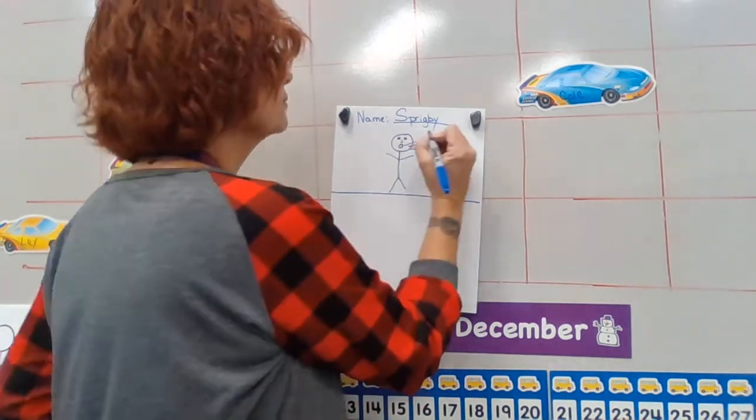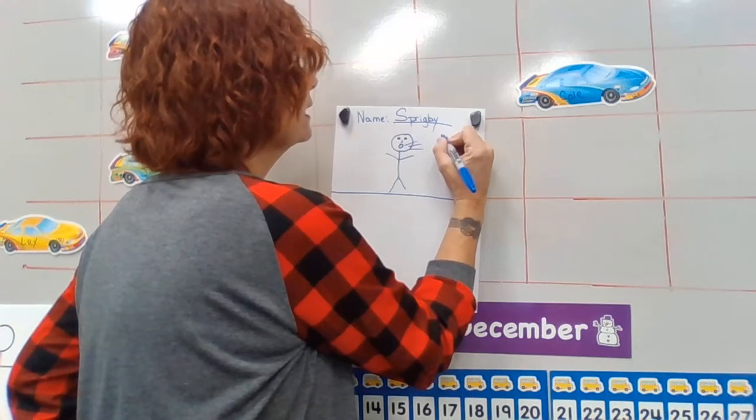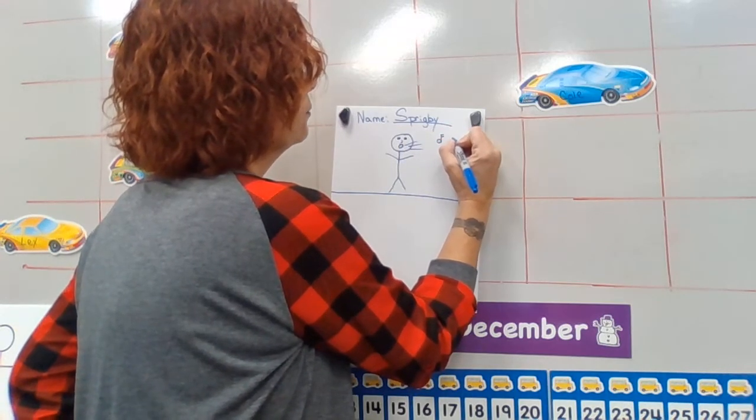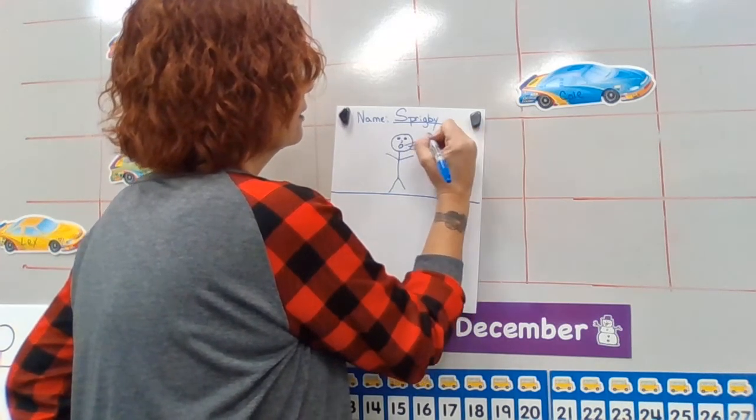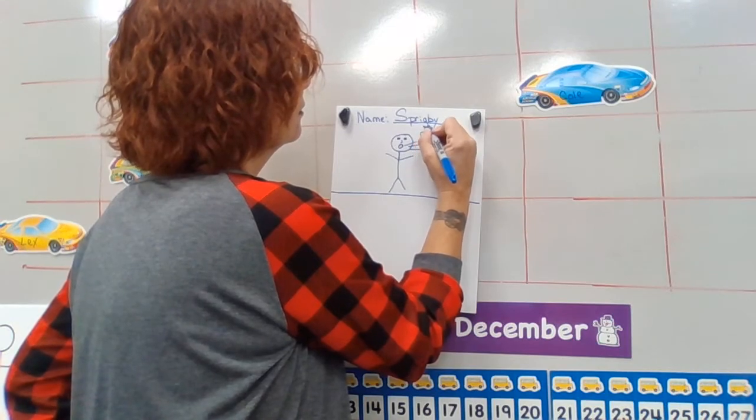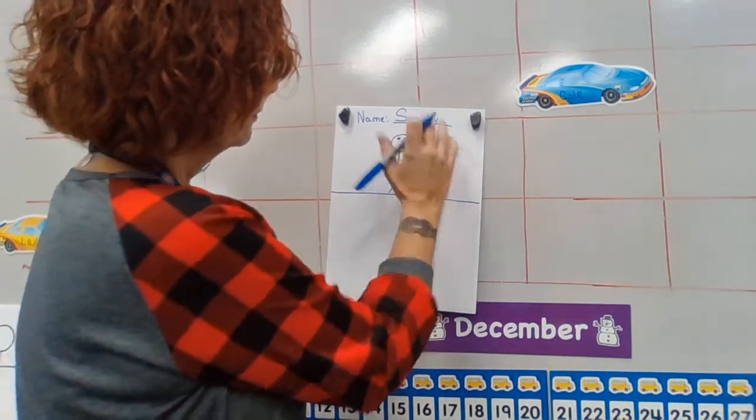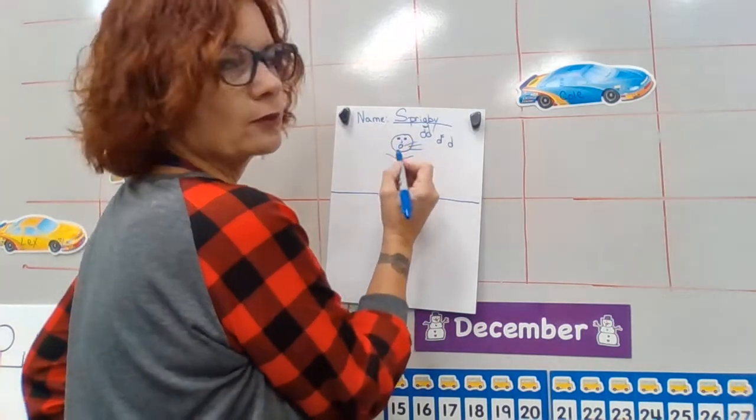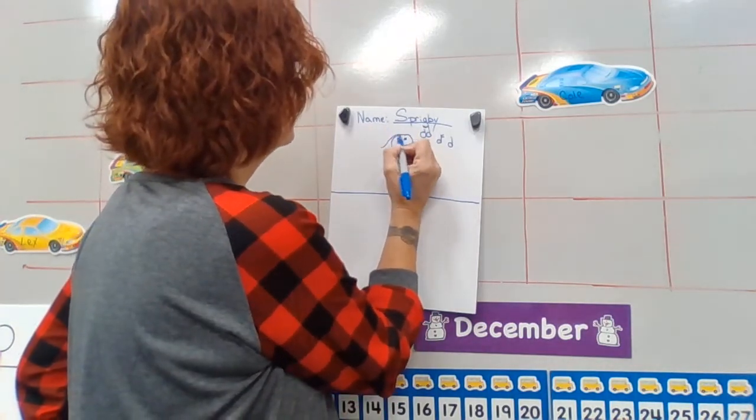I'm going to show you something called music notes. It looks kind of like a little D, but you just put these lines by it. And that means someone's singing.